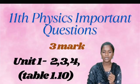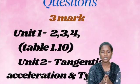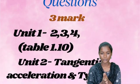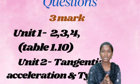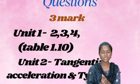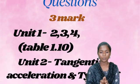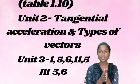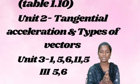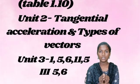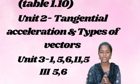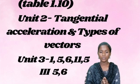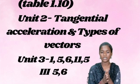The next three marks are important. In unit 1, questions 2, 3, and 4 are important. In the book, table 1.10 is very important. And in unit 2, tangential acceleration and types of vectors are very important questions. In unit 3, questions 1, 5, 6, and 11 are important.